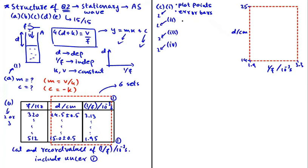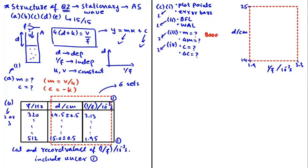Part C1 is very time consuming — it takes up most of your graph question time because you must plot all six points with error bars accurately. However, part C2 can be done quickly (in under 30 seconds): we draw the best fit line and the worst acceptable line. In part C3, we determine the value of gradient and its uncertainty. In part C4, we determine the y-intercept and its uncertainty. For this question: gradient = 8000, uncertainty in gradient = ±900; y-intercept = −0.60, uncertainty in y-intercept = ±2.26.